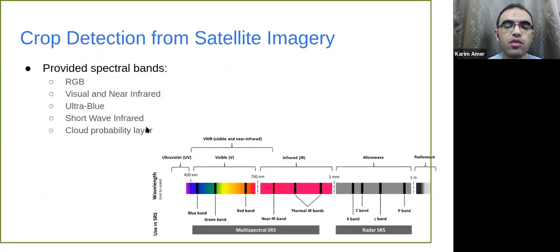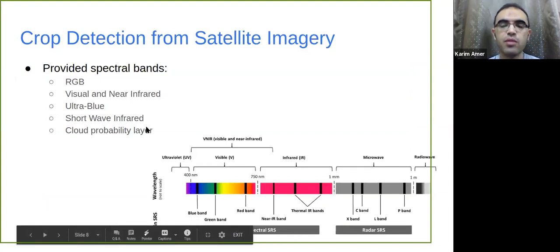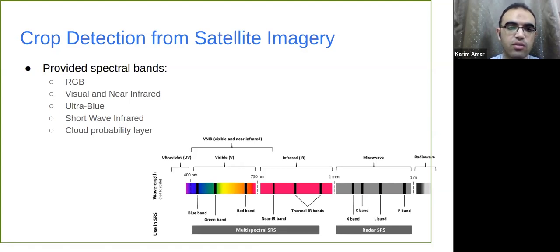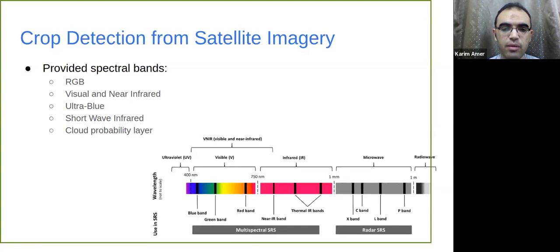As I mentioned, the data has 13 spectral bands. For normal images you have only red, green, and blue channels, but satellites can also capture other channels at different wavelengths — specifically the visual near-infrared, ultra-blue, and shortwave infrared alongside the RGB channels. The competition also provided a cloud probability layer to identify, for each pixel, the probability of having cloud cover.